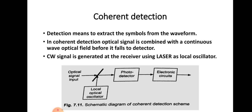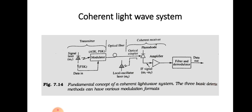Next is coherent detection. Detection means extracting symbols from the waveform. In coherent detection, the optical signal is combined with a continuous wave optical field before it falls to the detector. The continuous wave signal is generated at the receiver using a laser as a local oscillator. This is the schematic diagram of the coherent detection scheme — there is an optical signal input, a local optical oscillator which produces a higher frequency signal, these two signals are mixed, given to the photodetector, and then various electronic circuits process the result. We have gone through the IMDD structure which contains a transmitter, optical fiber, and receiver.